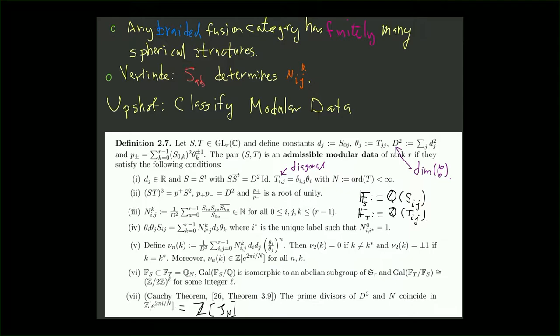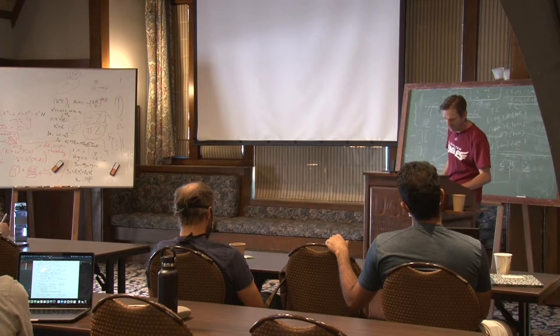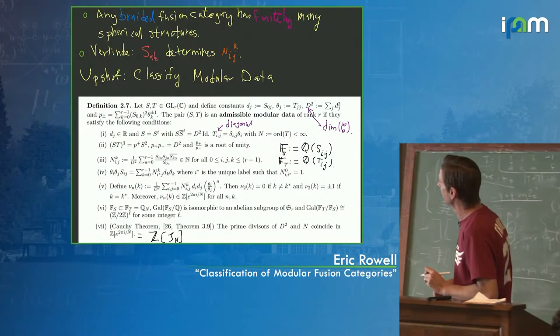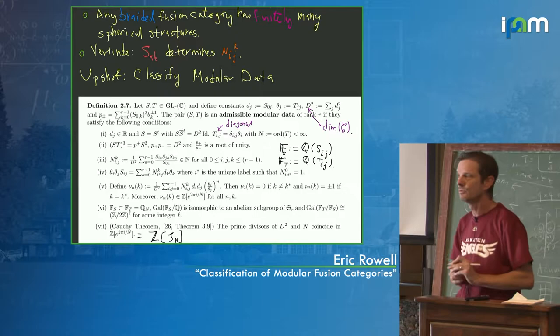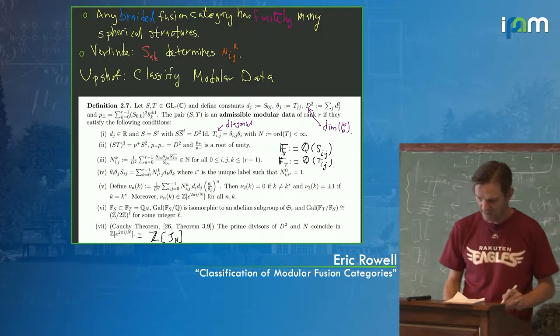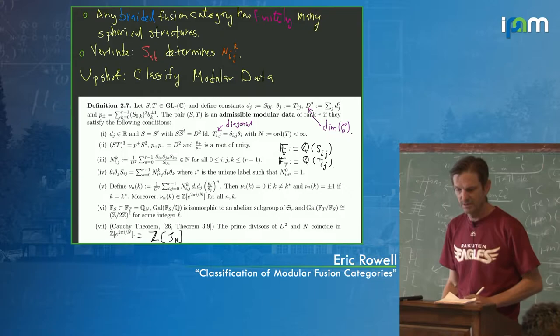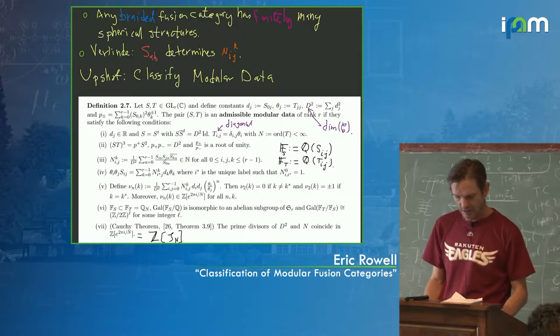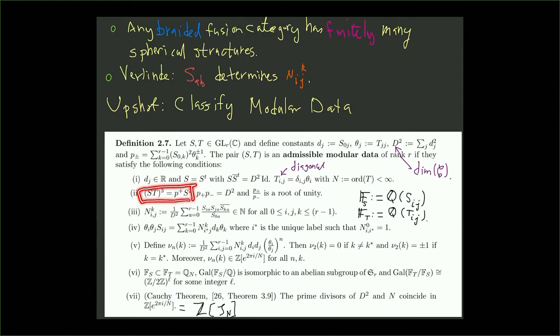So the upshot is that you get really close to a classification if you can just classify all modular data — remember, modular data is just the S and T matrix. On the slide I have a massive list of constraints on S and T for a modular category. T is a diagonal matrix. There are Gauss sum conditions. S and T give a projective representation of the modular group SL(2,Z). There's some Galois theory involved: all entries of the S matrix live in the same field generated by the entries of the T matrix, which is a cyclotomic field, since the twists are always roots of unity.